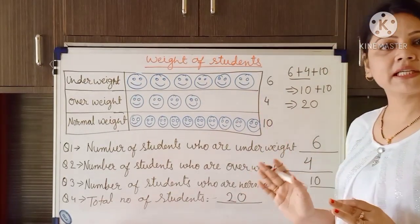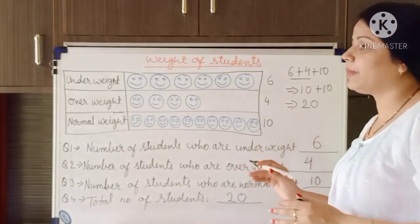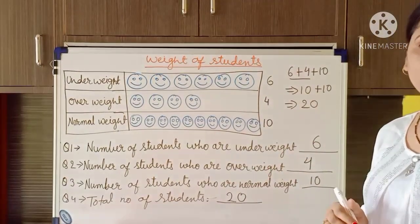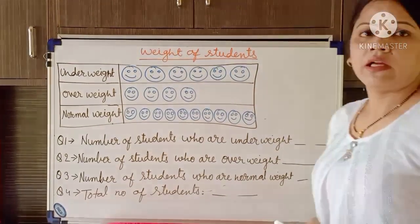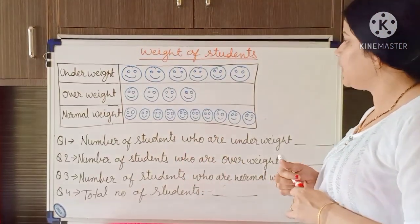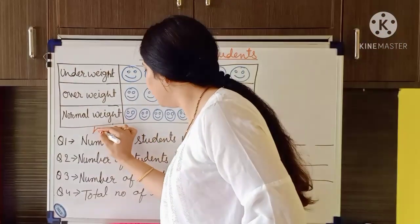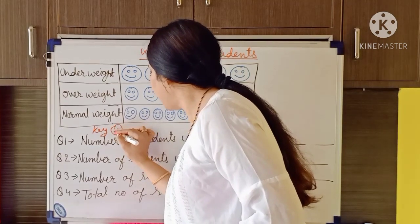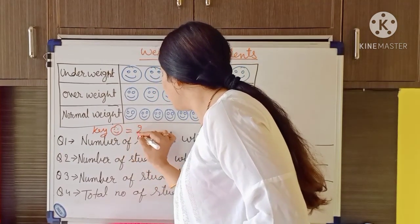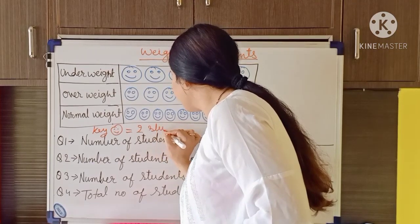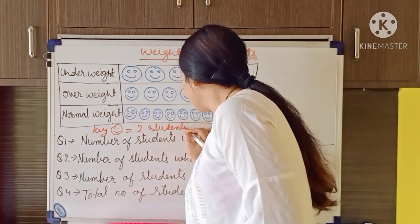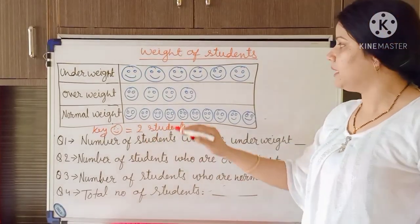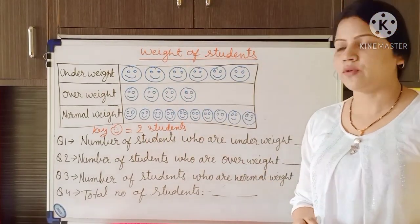Now I think it is very clear to you how to read the pictograph. Just pause this video and write these examples in your maths notebook. Now I am taking the same pictograph but this time I am giving a key: Key — 1 smiley is equal to 2 students.